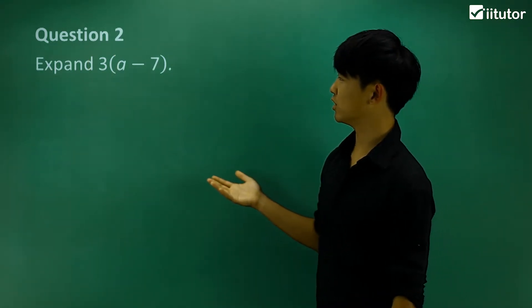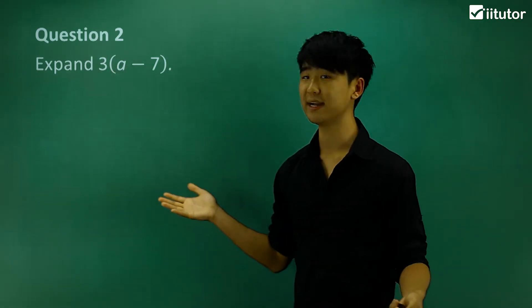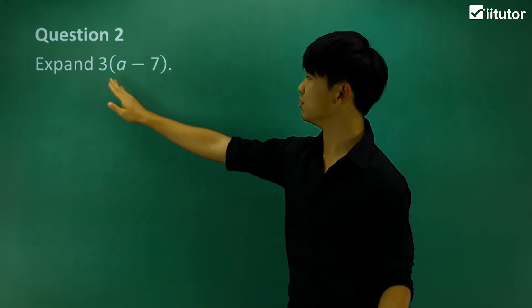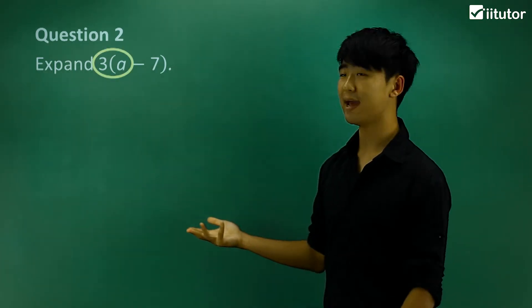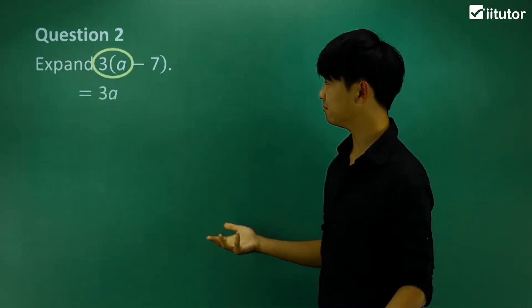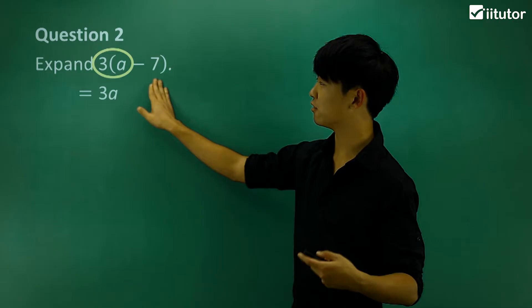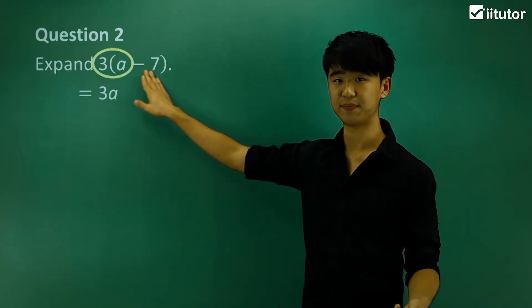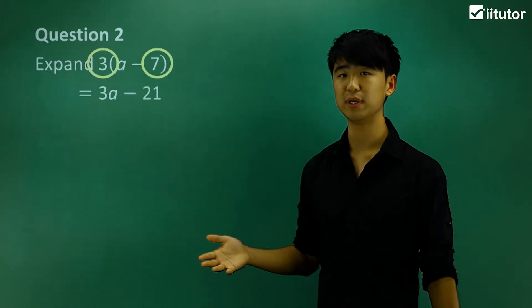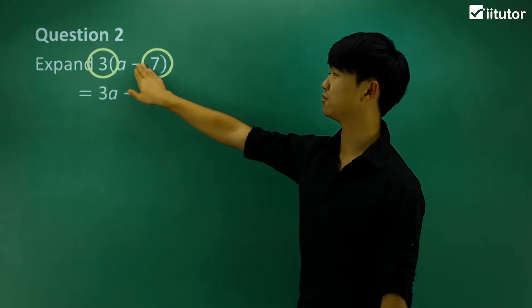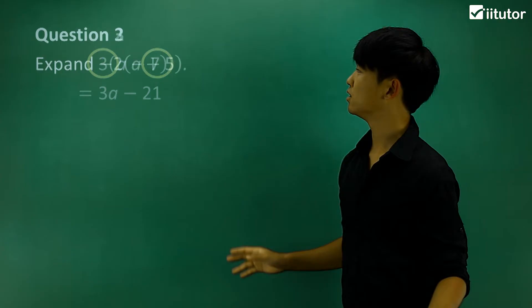Now for question 2, we have 3(a−7). The first thing is to multiply 3 and the first term a, giving 3a. Then we multiply 3 by the next term — think of it as 3 multiplied by negative 7 — which gives negative 21. So the expanded form is 3a − 21. It's very important that we keep the correct sign.